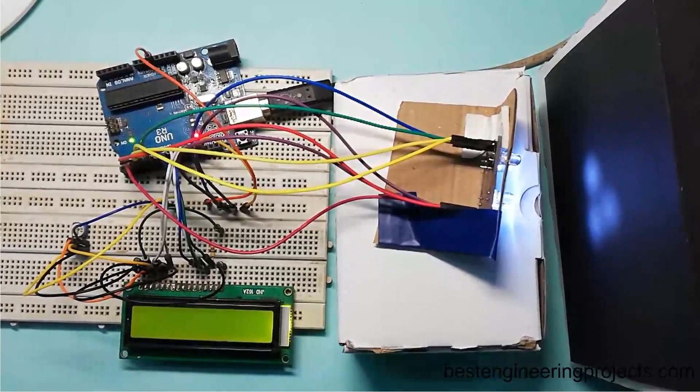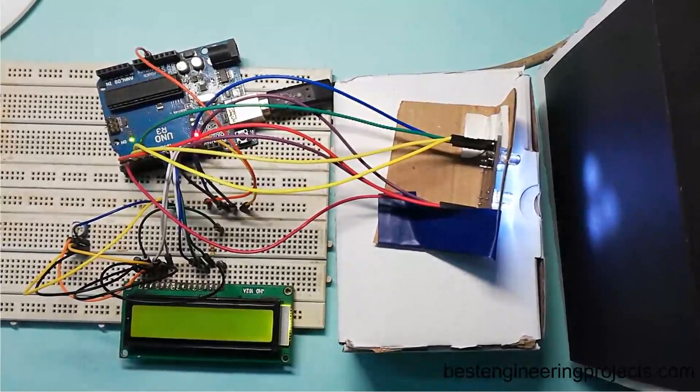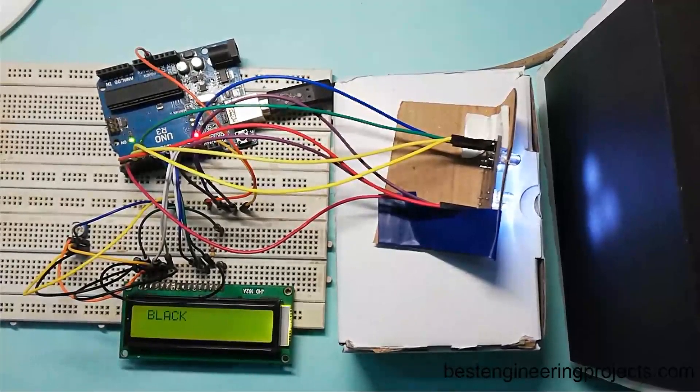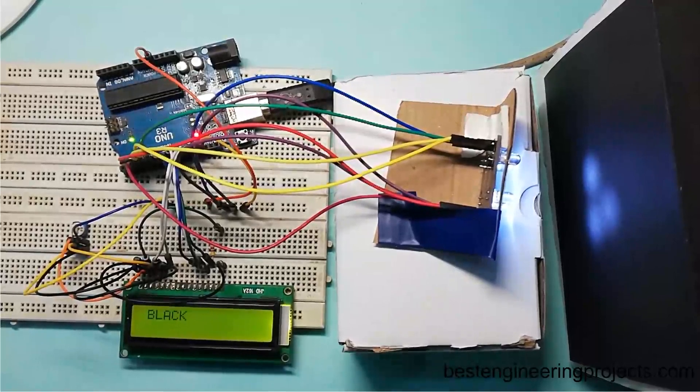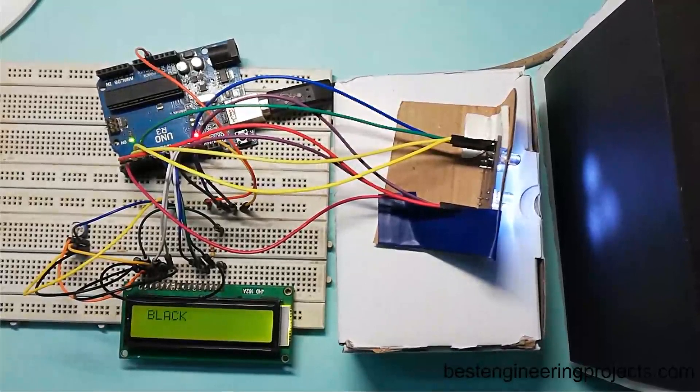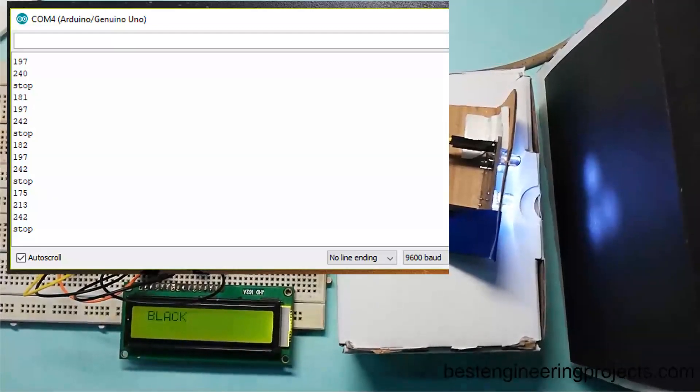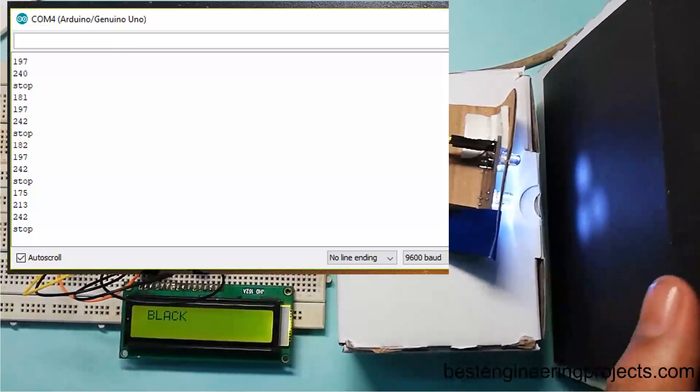At first, we have to read the output frequency of different colors in the serial monitor. In this part, you have to write down the frequency value when you place different colors in front of the sensor. For that, open the serial monitor at a baud rate of 9600, as we have used 9600 in our code also. Then place any color in front of the sensor at different distances. As you can see here, I had placed black.